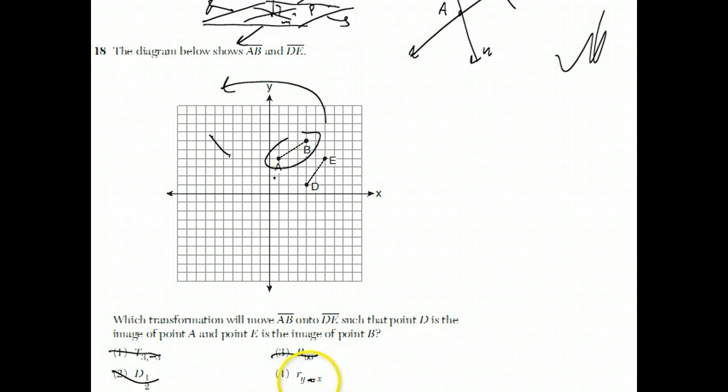Well, that leaves one choice, reflect Y equals X. When you reflect something over the Y equals X line, the X and Y coordinates get interchanged. So this is point one, four. It would get mapped to point four, one, which is exactly where D is. And B is here at one, two, three, four, one, two, three, four, five, six. And if you go to six, four, you get point E. And that's why the answer is choice four.